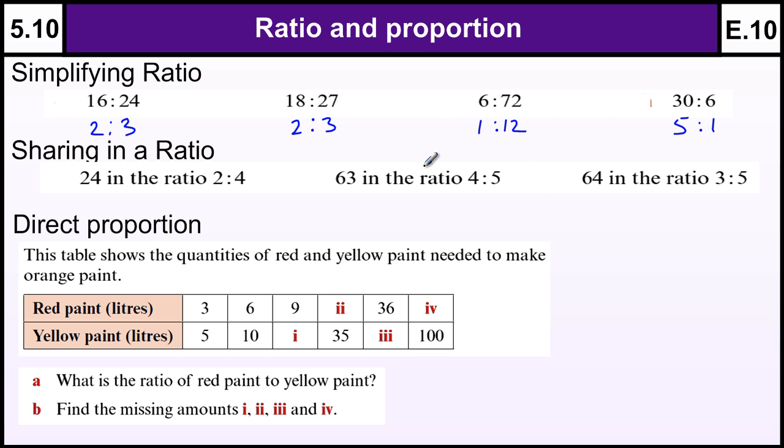If you can't do that then just start with small numbers and build your way up until you can't do any more. Sharing in a ratio. 24 in the ratio 2 to 4. There's a method for this which you add the two